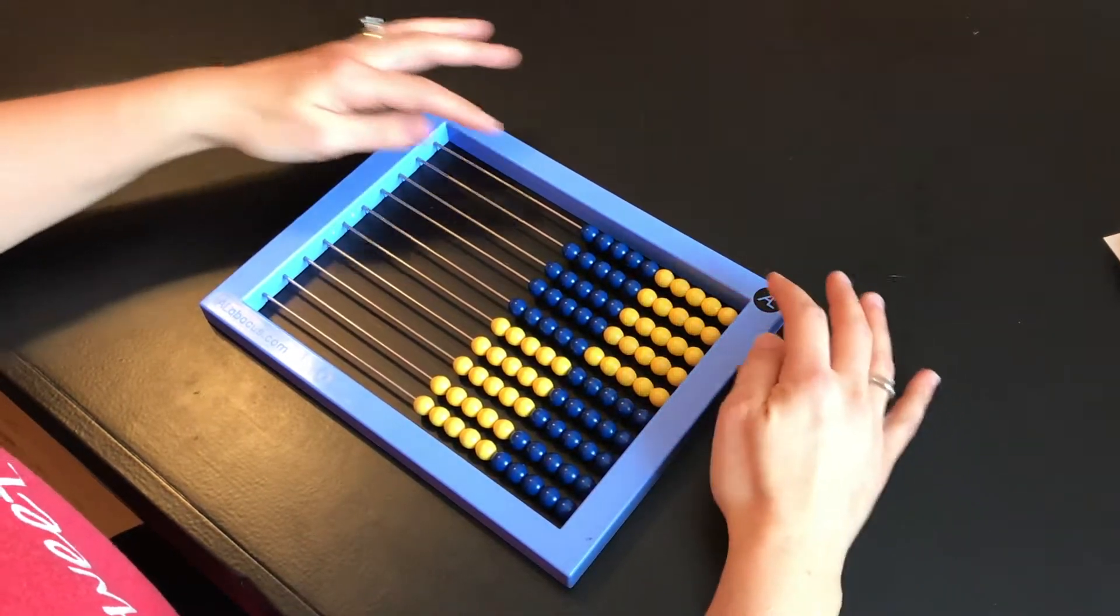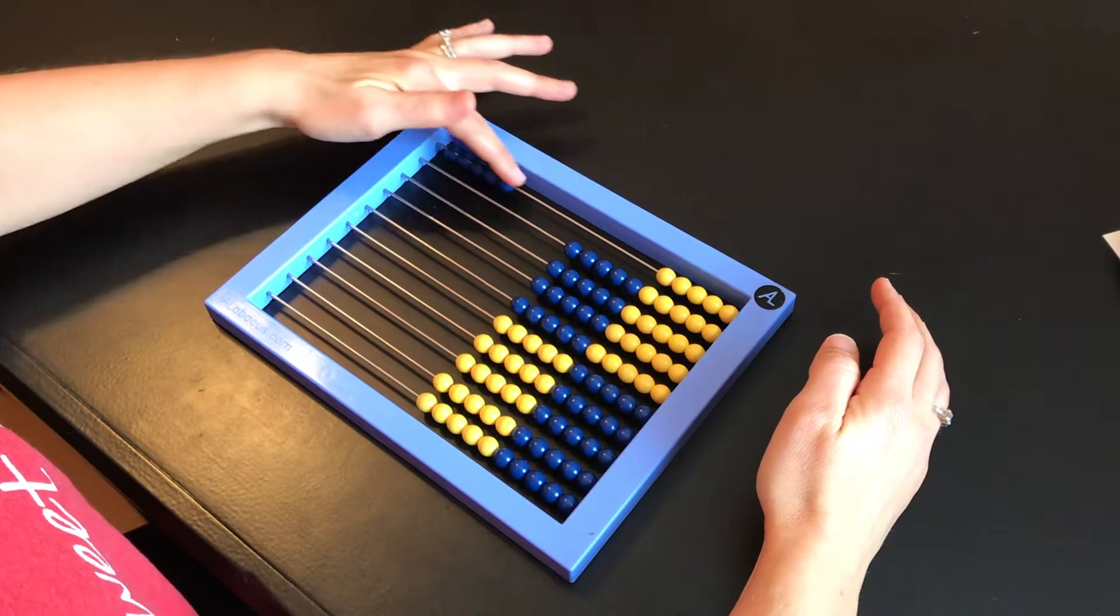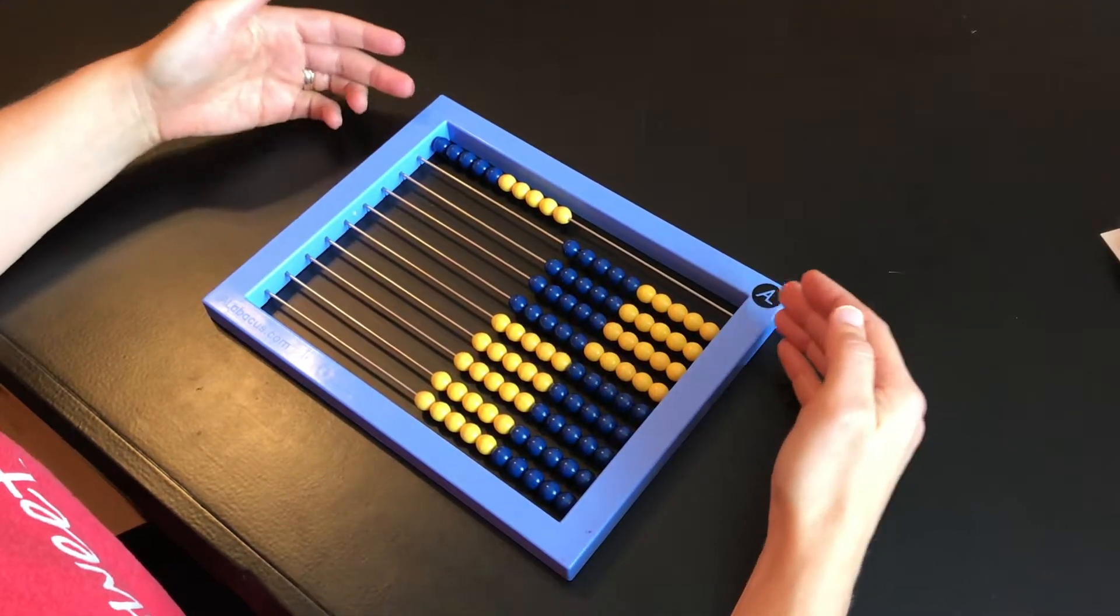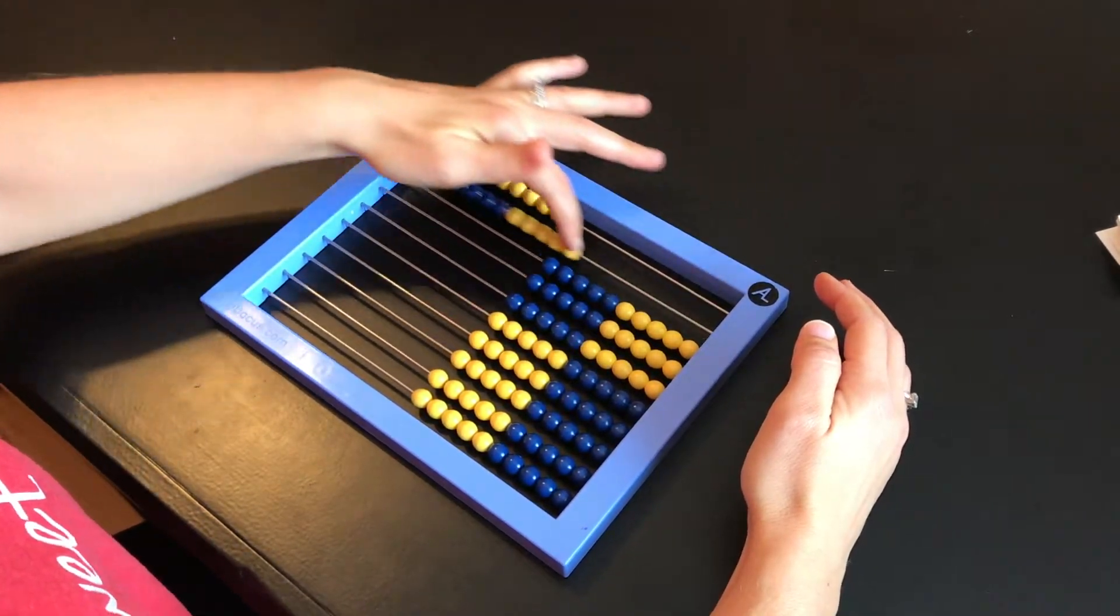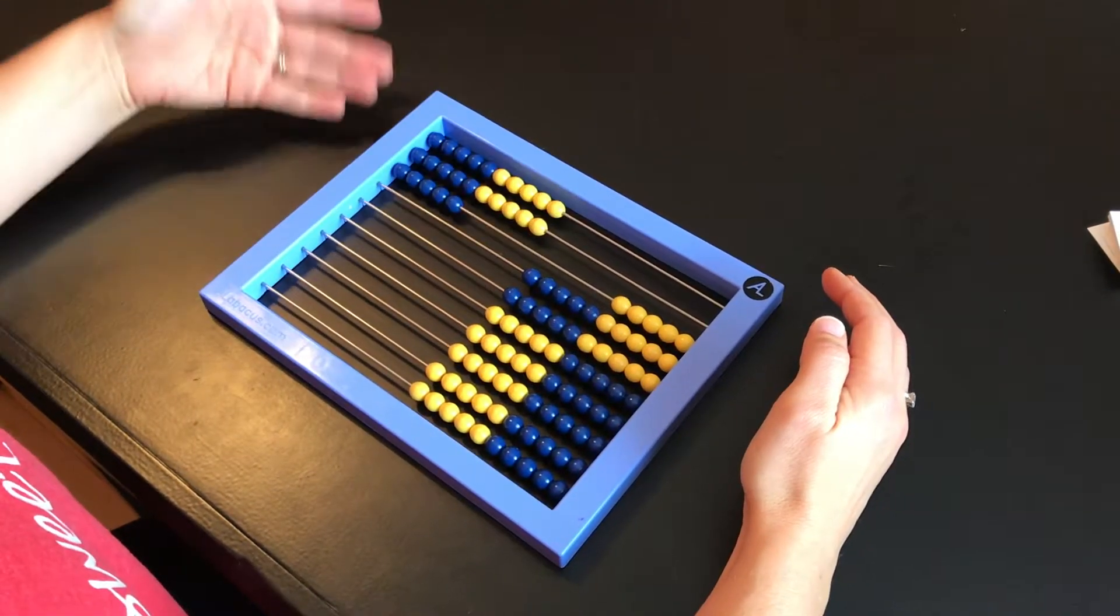What's great about the abacus is that everything is color coded in terms of fives. So the first set here is five. You move it again, it's 10. So it teaches your child to easily pick up and see the differences between 5, 10 and to be able to count quickly 10, 20, 25.